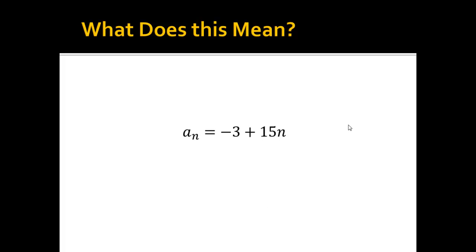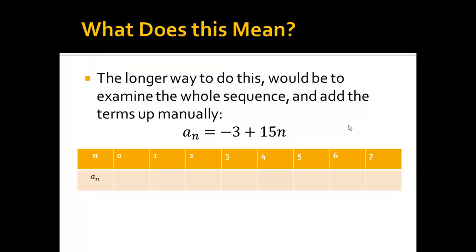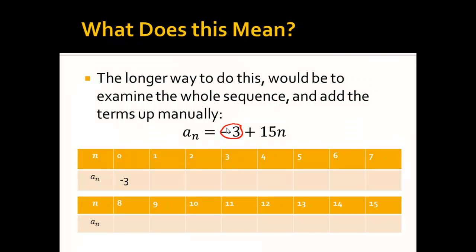What does this mean? Well, all right, so here's the general rule of the sequence. So, this is the sequence I'm building here. And the longer way to do this would be if I looked at the whole sequence, everything, and added up the terms manually. So, I'm going to go ahead and make my table here. Now, the way that I've always done the rule before is that a sub zero term is always this thing that's kind of just hanging out here.